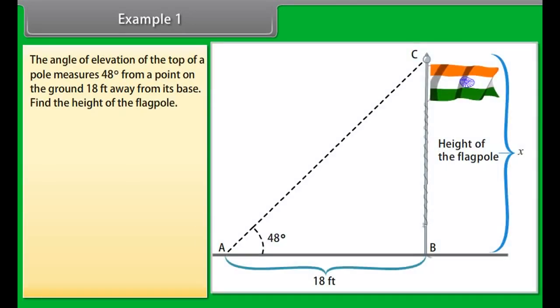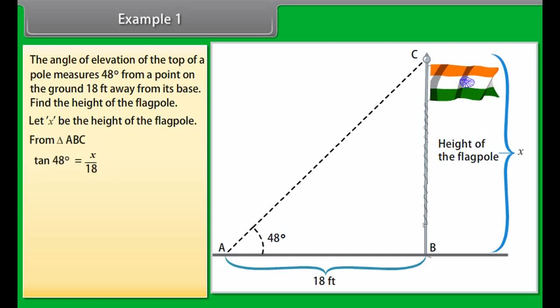Example 1: Let's solve some examples to better understand angle of elevation and depression. The angle of elevation of the top of a pole measures 48 degrees from a point on the ground 18 feet away from its base. Find the height of the flagpole. Let's first visualize the situation. Let x be the height of the flagpole. From triangle ABC, tan 48° is equal to x upon 18.